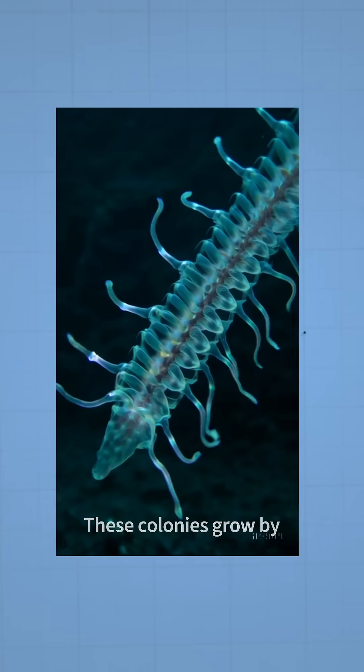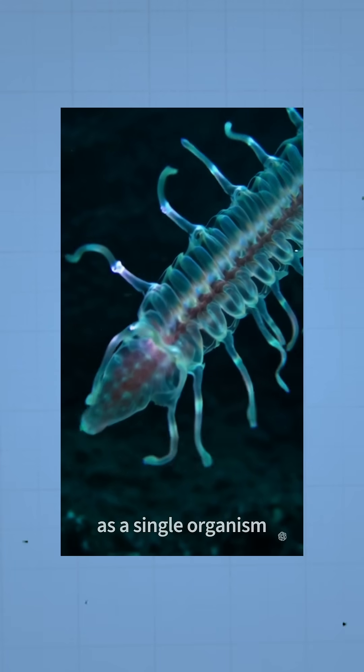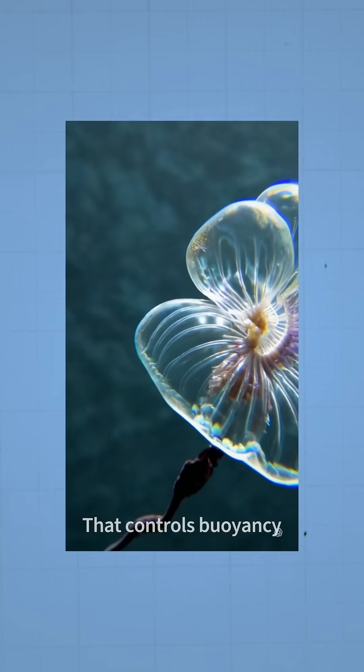These colonies grow by budding new zooids which never survive alone but operate together as a single organism. The colony begins at a pneumatophore, a gas-filled float that controls buoyancy and orientation.